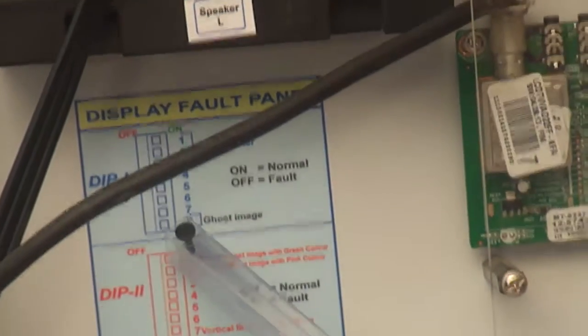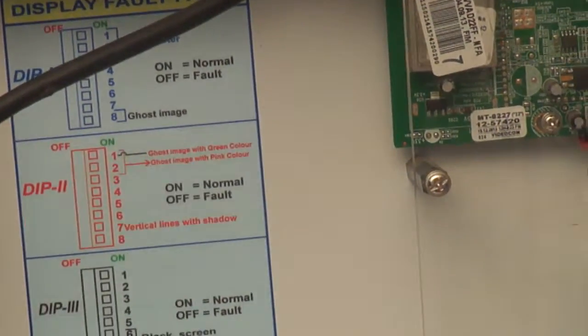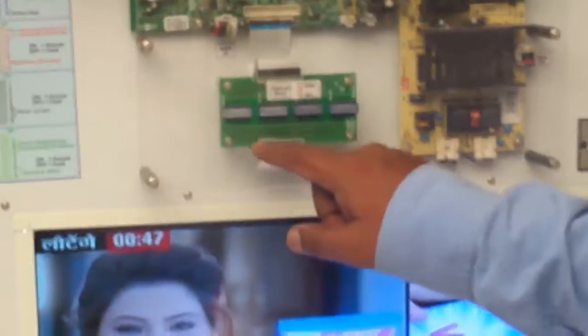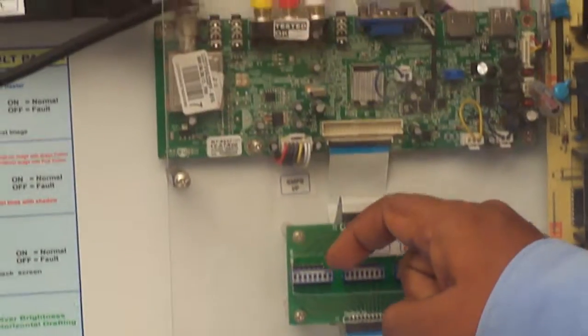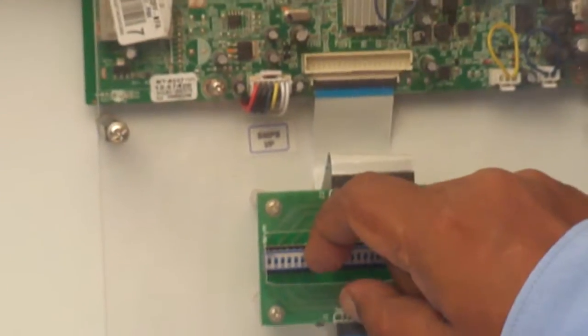the eighth one, DIP one position eight. When I create a fault, then on the screen we will get a ghost image. So this is DIP one. I will create a fault. I will just make the switch